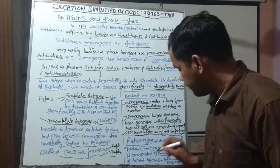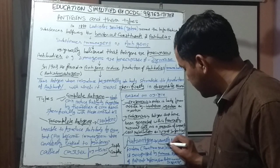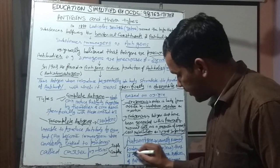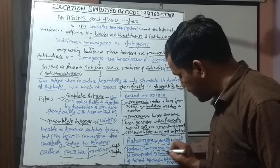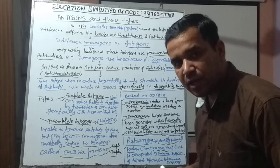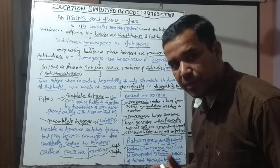Next is the autoantigen. Usually these are normal proteins, and sometimes they can be DNA and RNA, that are recognized by the patient's own immune system.